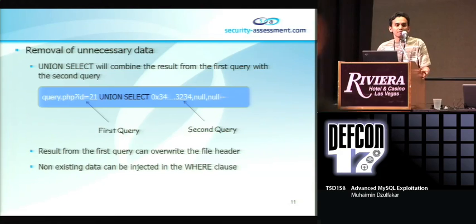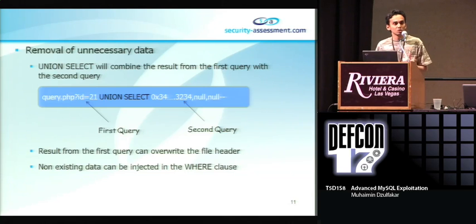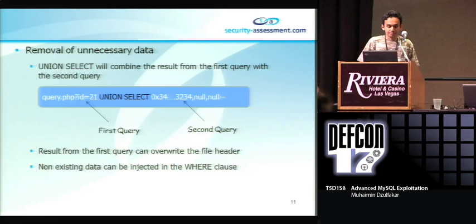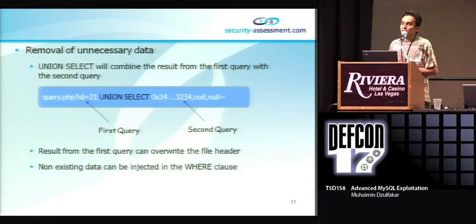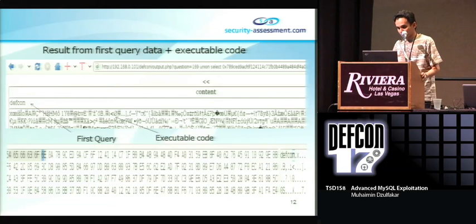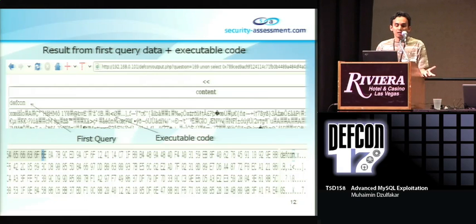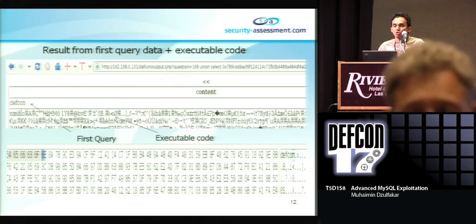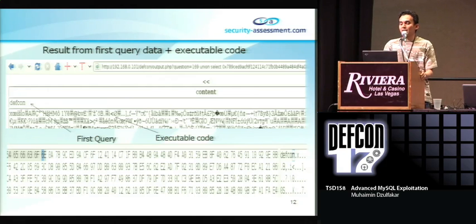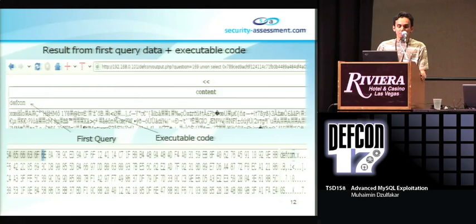UNION SELECT will combine the result from the second query and the first query. Most of the time, the result from the first query will override your file header. To prevent this, we can inject a non-existing value in the WHERE clause. For example, if question equals 1 to 6-9 would return the string 'DefCon', which would override our file header. By finding a non-existing value to replace that variable, we can force the application to return empty data and prevent our file from being corrupted.